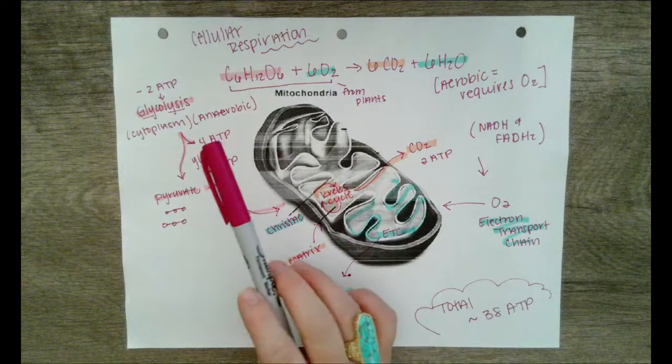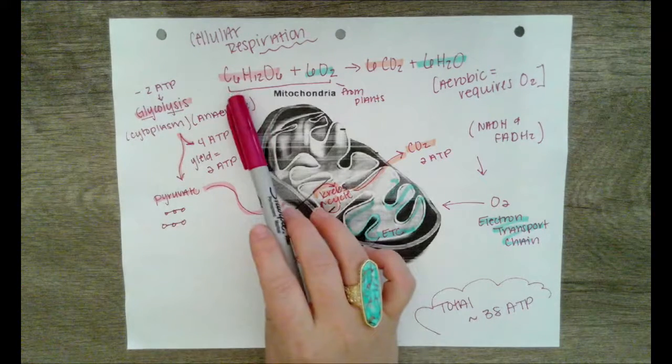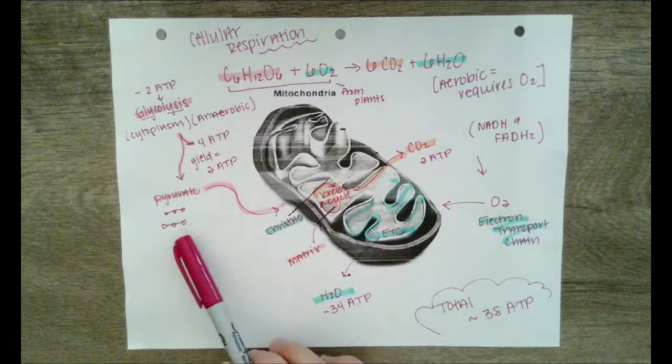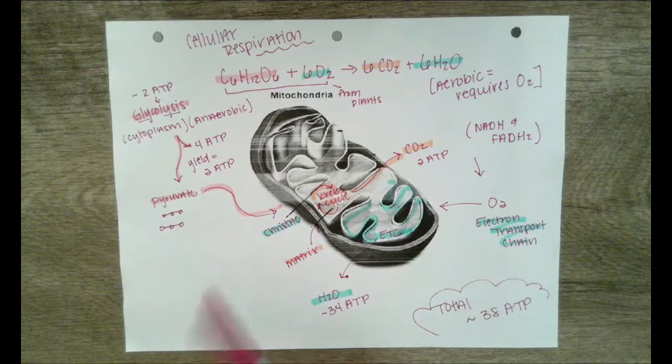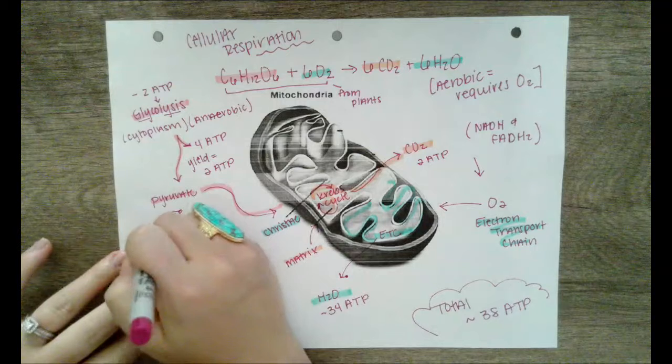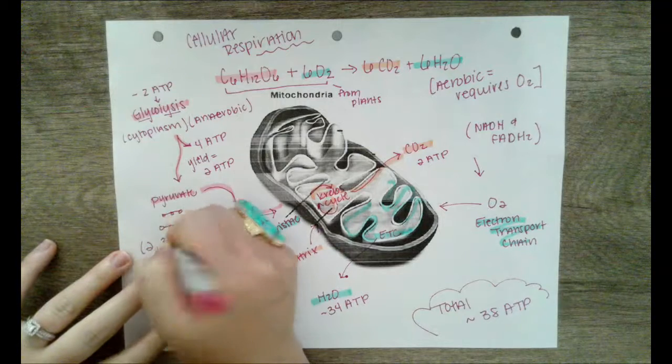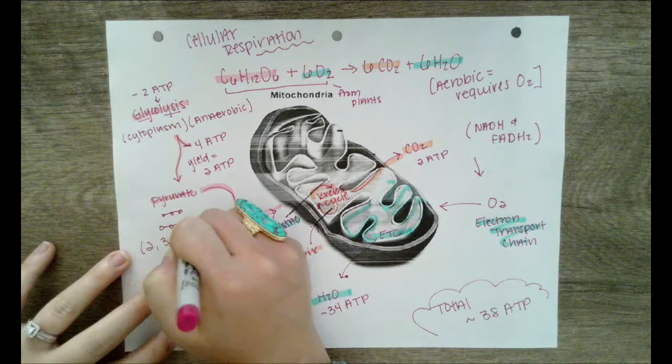Glycolysis takes glucose, which is a six-carbon sugar, and splits it into two pyruvate molecules, or two three-carbon molecules.